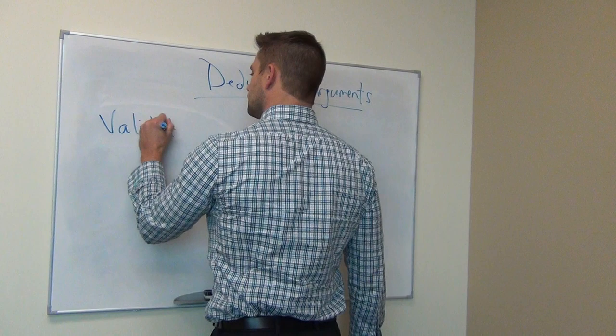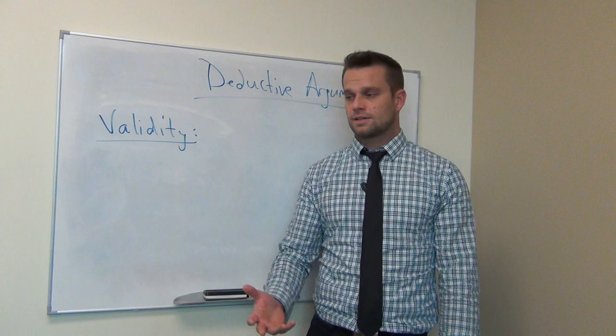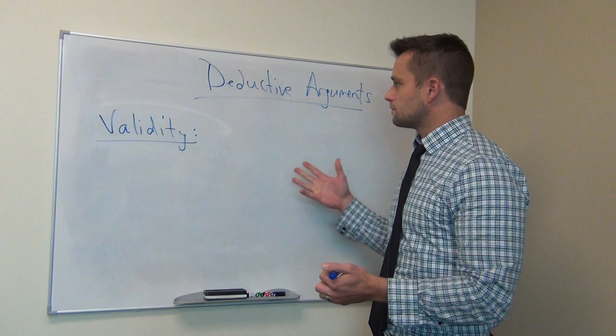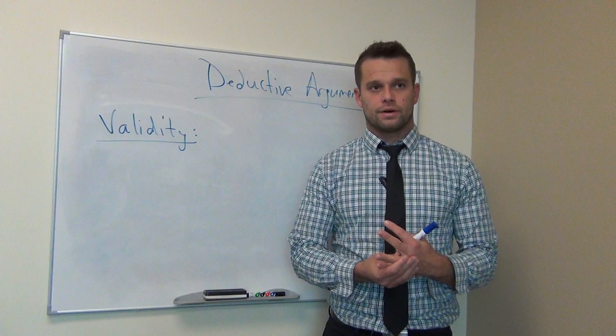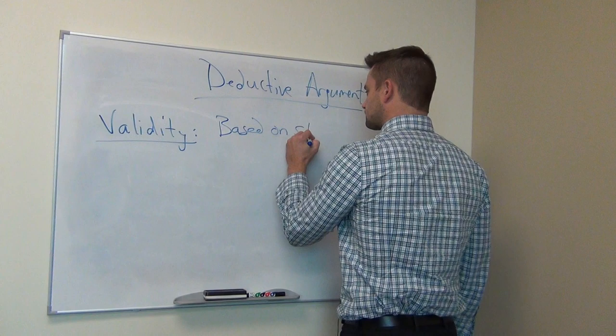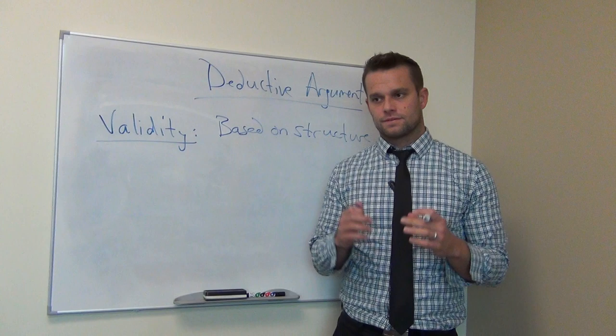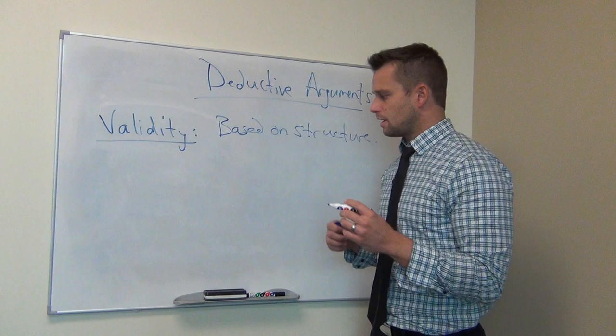Validity in everyday conversation — when you're talking to somebody, they might say something like, 'well that's a valid point,' meaning that's a true point, or something they tend to agree is the nature of reality. But in logic, it's important to understand that validity has nothing to do with truth. Although in a valid deductive argument, true premises guarantee a true conclusion, validity is based on the structure of the argument — not on whether the premises are true or false. Don't think of valid in logic as being true or false.